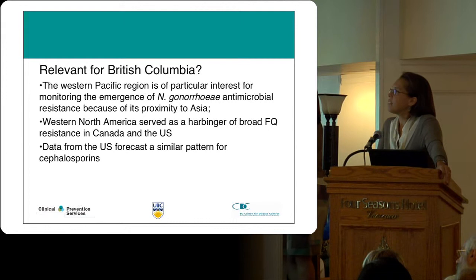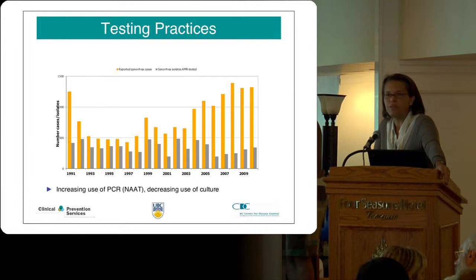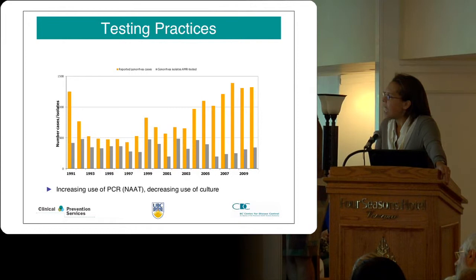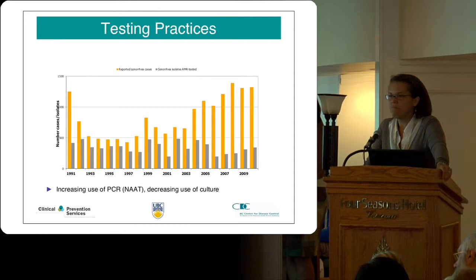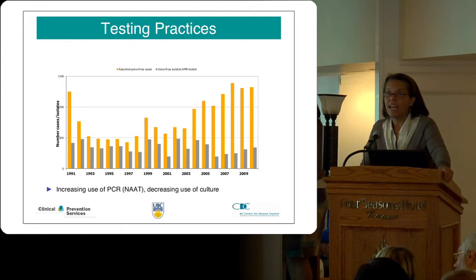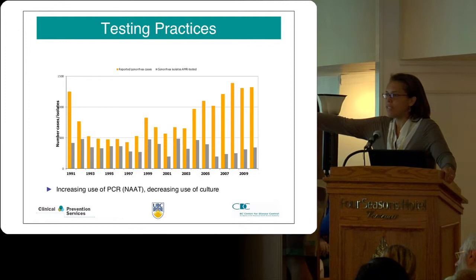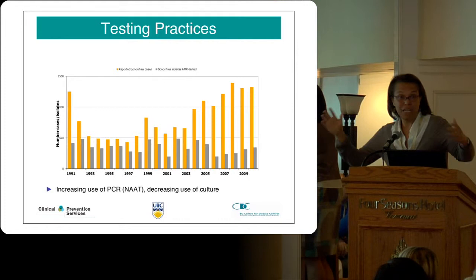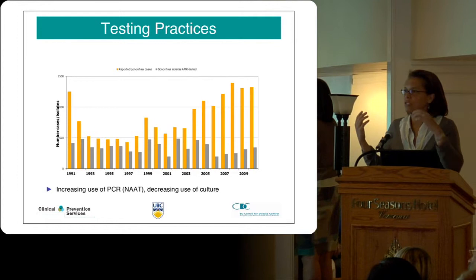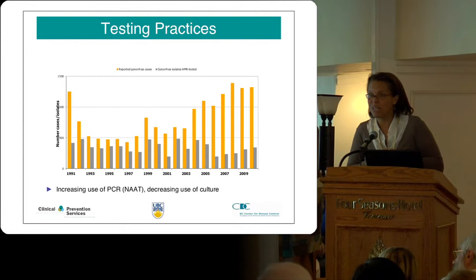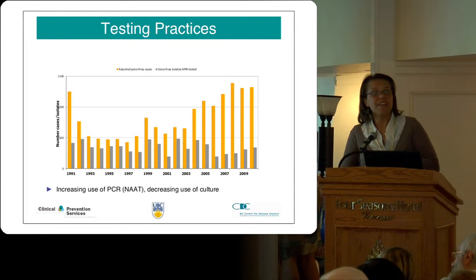One of the big changes for managing GC is our testing practices. When nucleic acid testing came in, we appropriately moved to NAT because of improved sensitivity and the appeal of urine testing for young men. But one of our key resistance monitoring tools — culture — was being lost. At our provincial STI clinic, a senior nurse named Linda Knowles insisted we keep doing cultures. She was right, because monitoring antimicrobial resistance patterns requires culture. She was a tremendous force and we are grateful to her.